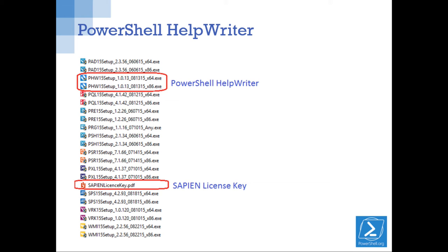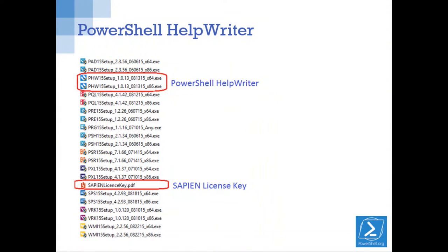PowerShell Help Writer is the executable file with a PHW extension. When you open it, it will ask you for a key. The key is in the PDF file. Never open PDF files unless you're sure you know what's in there — except for this one, where I told you the license key is in there.